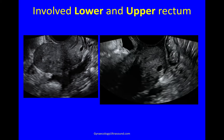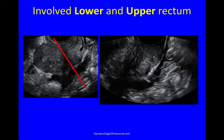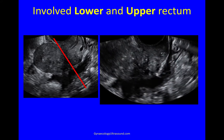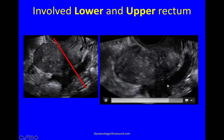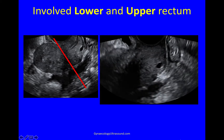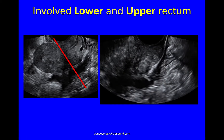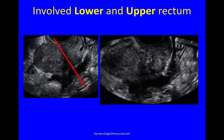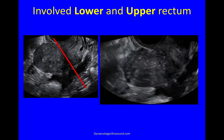This is an example of involved lower and upper rectum. Looking at the picture — uterus in the longitudinal plane — draw that line of bladder, internal os, torus, and you can see that this bowel nodule affects both the level below this line, below the torus, which is lower rectum, and above it, which is upper rectum. There's the probe going into the posterior fornix — you can already see the bowel nodule; it's very large. Coming into the posterior fornix, you can already see dense fibrosis behind the cervix and an attached nodule which stretches from lower to upper rectum.